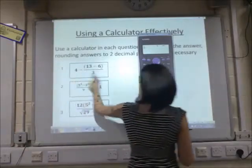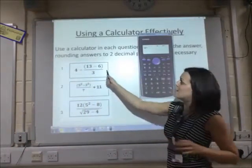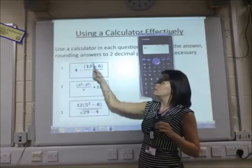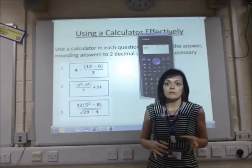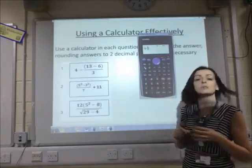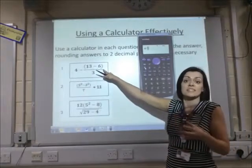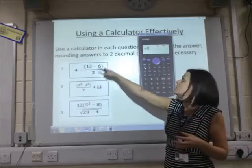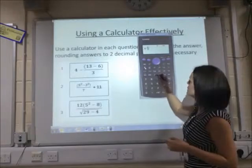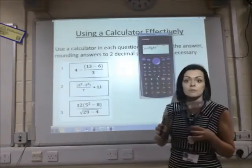This question starts with 4 take away, and then the whole of this thing is in a fraction. So, let's not try and work things out separately and confuse ourselves. Let's press the fraction button, and on the top of the fraction, there's 13 take away 6 in the brackets. So, on the top of my fraction, I'm going to type in 13 take away 6 inside some brackets.